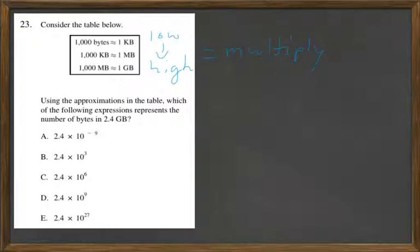And so we have three zeros here for bytes to kilobytes, and then the next step is another three zeros for the megabytes, and then another three zeros from megabytes to gigabytes.